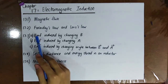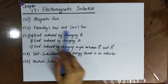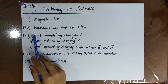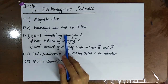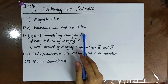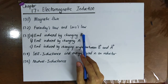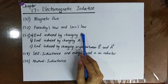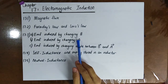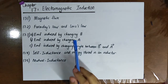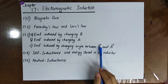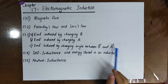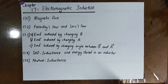In the next video, we will talk about the EMF induced by changing magnetic flux density, changing area, or changing the angle between B and the area vector.